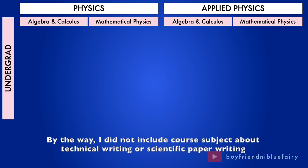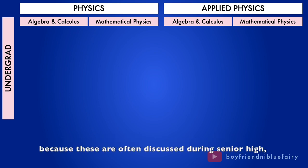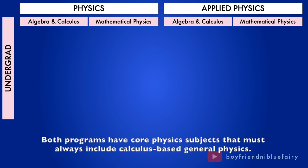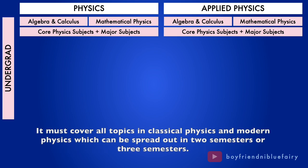By the way, I did not include core subject about technical writing or scientific paper writing because these are often discussed during senior high or that all Bachelor of Science degree programs must include a subject related to these. Both programs have core physics subjects that must always include calculus-based general physics. It must cover all topics in classical physics and modern physics which can be spread out in two semesters or three semesters.